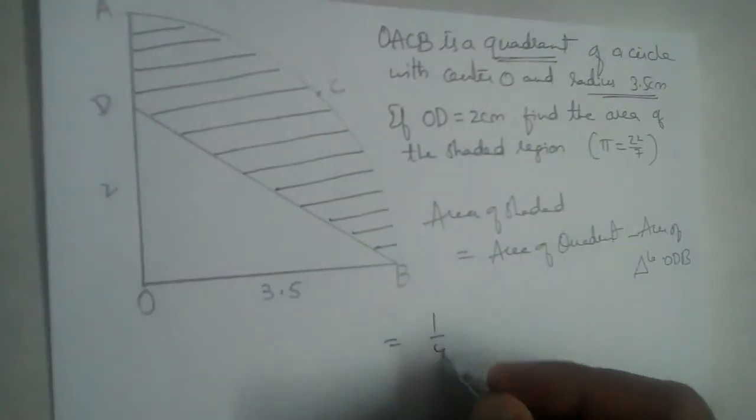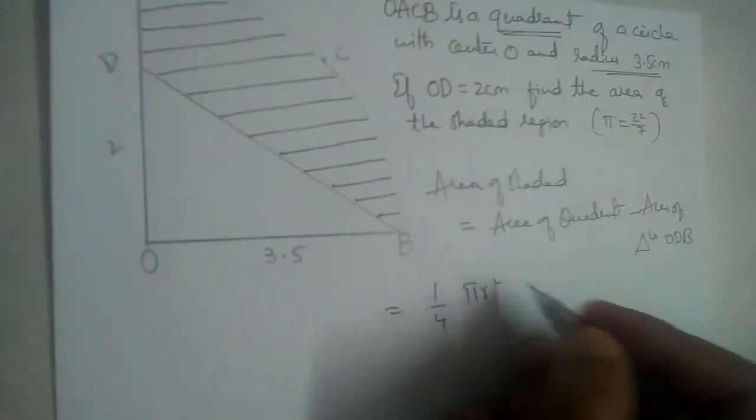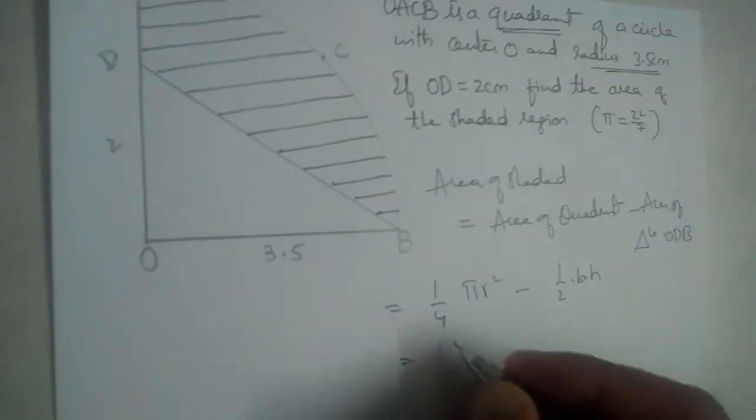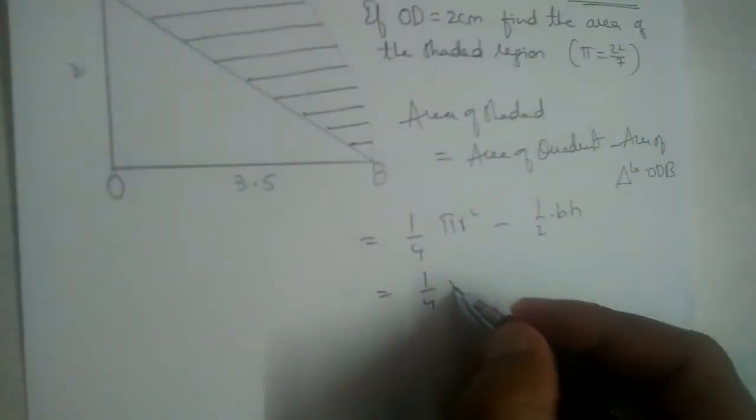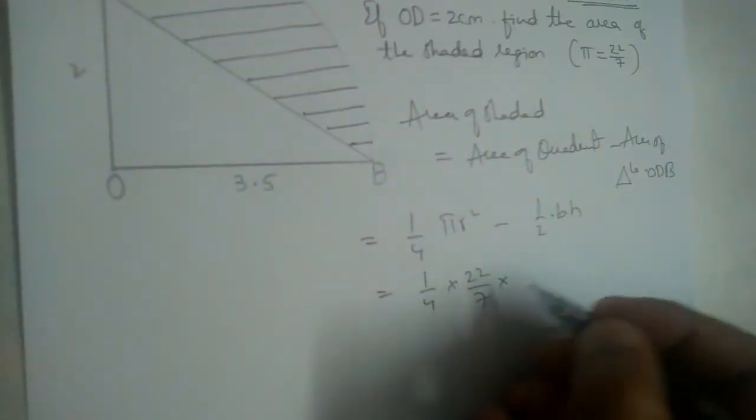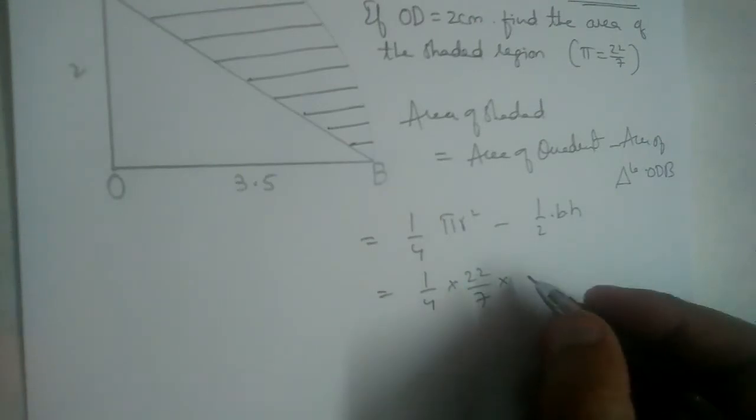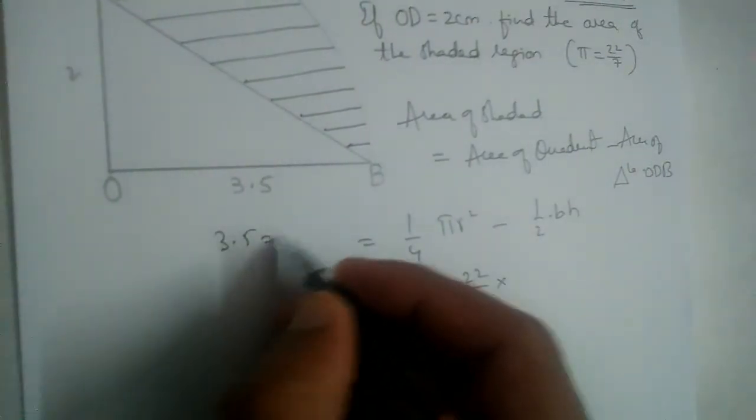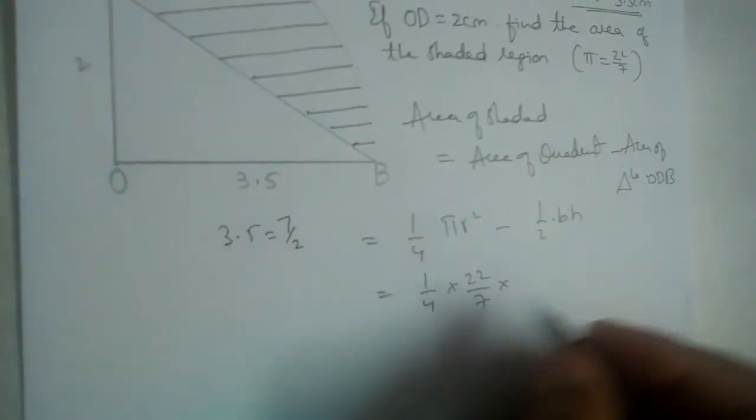So area of quadrant: one by four pi r square minus area of triangle: half into base into height. So it is one by four, pi is 22 by 7, into r square. What is r square? Radius is 3.5, right. So 3.5, let us take it as 7 by 2.